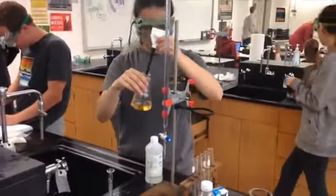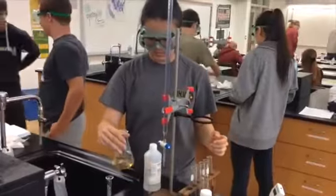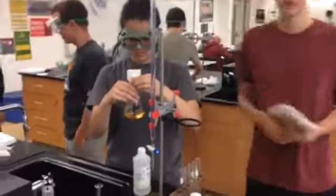Continue titrating in 1 ml increments and recording the pH after every addition until you're nearing the equivalence point. This could take a while, depending on which juice you use.